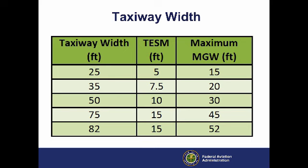As covered in our previous videos and Advisory Circular 150-5300-13 Airport Design, the first step in designing a taxiway system is to determine the proper straight-section taxiway width. These materials also provide the standard taxiway edge safety margins, or TESMs, and maximum main gear widths, or MGWs, associated with each taxiway design group, or TDG.